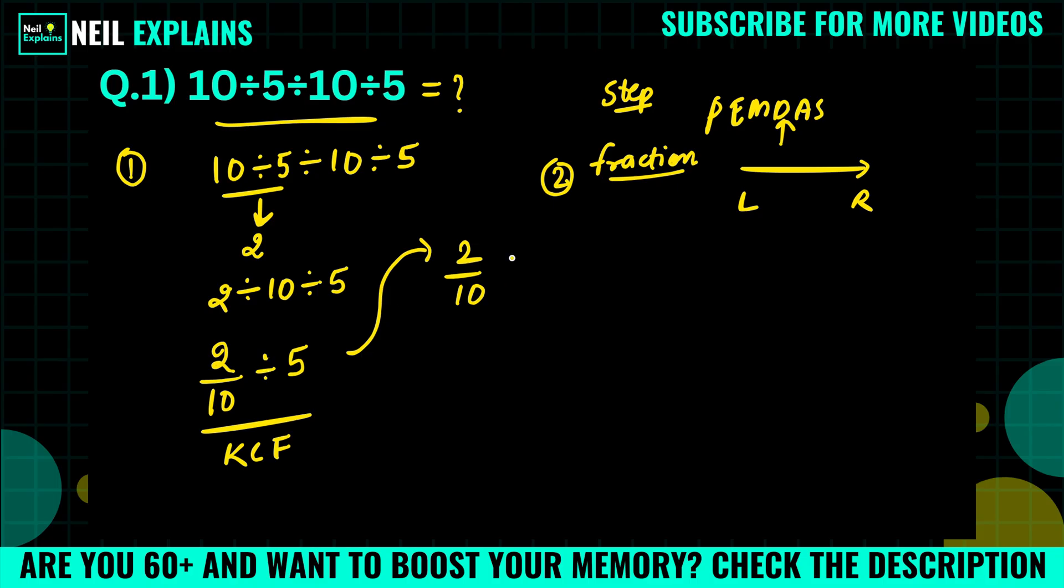And division will be changed to multiplication, 5 will become 1 by 5. Now what we get: 2 times 1 that is 2, and 10 into 5 that is 50. So here this is method 1. We don't need to solve this fractional method, this one is very simple.